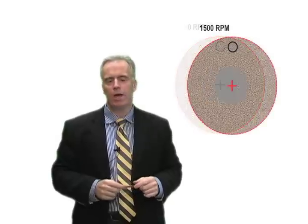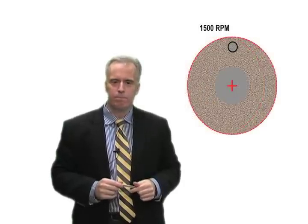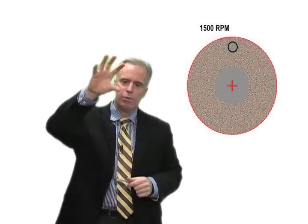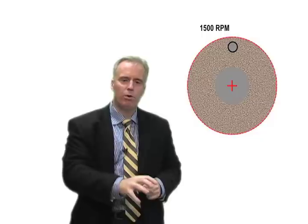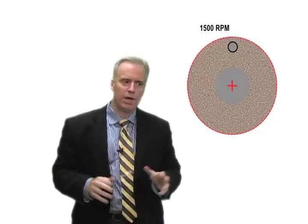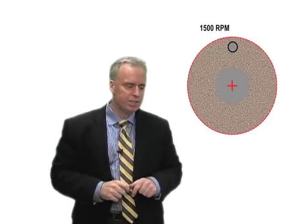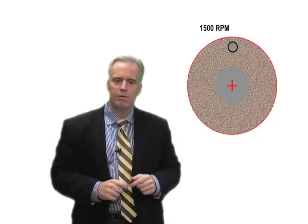I start spinning that wheel at 1500 RPM, well now that heavy point on the wheel is going to pull. And that heavy point is going to pull around and we're going to get what you might call some eccentricity in the wheel, where the heavy part is pulling.